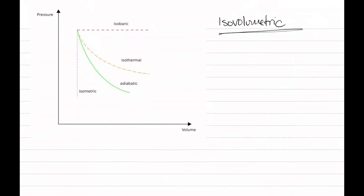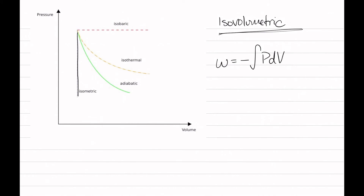Now let's look at an isovolumetric example. We know that work equals the negative integral of P dV, and we know that the integral is the area under the curve. For an isovolumetric change, we can see that we literally have nothing under the curve — there is no area under the curve. So if there is no area under the curve, the integral will be 0. Another way to look at it is that we're taking an integral of P with changing volume, but if volume doesn't change, the integral will be 0.